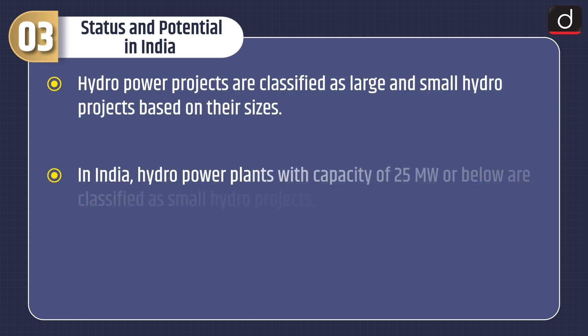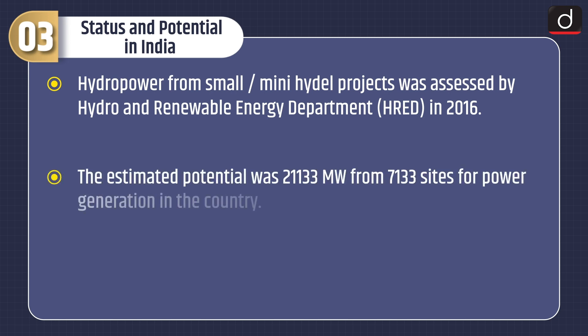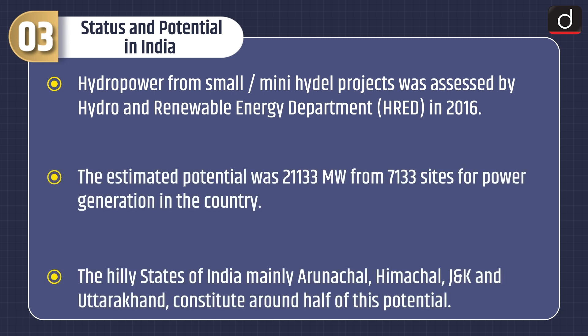Hydropower projects are classified as large and small hydro projects based on their sizes. In India, hydropower plants with a capacity of 25 megawatt or below are classified as small hydro projects. Plant capacity up to 3 megawatt, and later in 1999 up to 25 megawatt, was transferred to the Ministry of New and Renewable Energy. Hydropower from small or mini hydro projects was assessed by the Hydro and Renewable Energy Department in 2016. The estimated potential was 21,133 megawatt from 7,133 sites for power generation in the country.